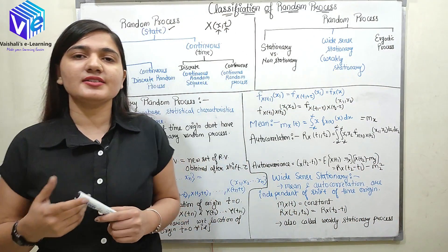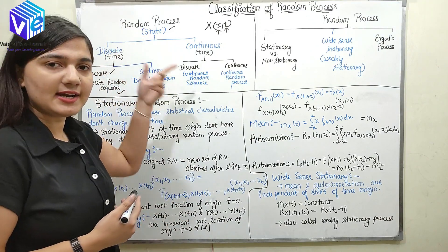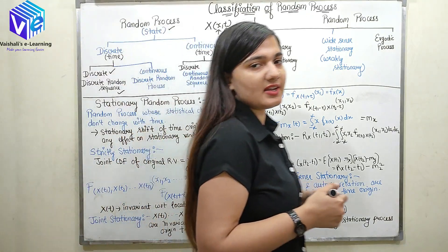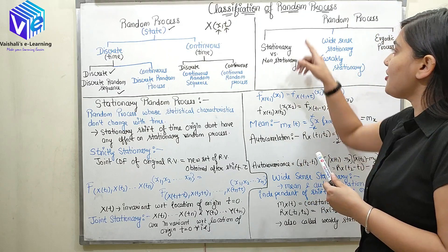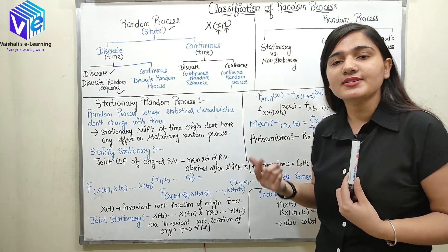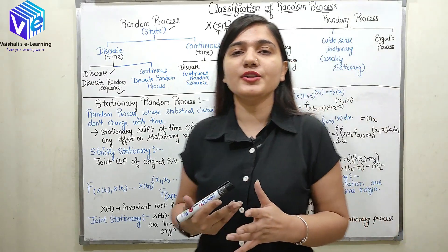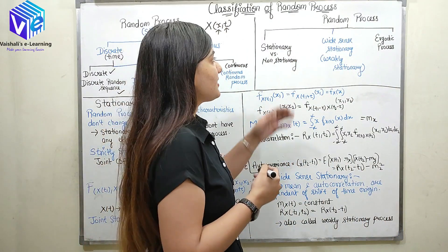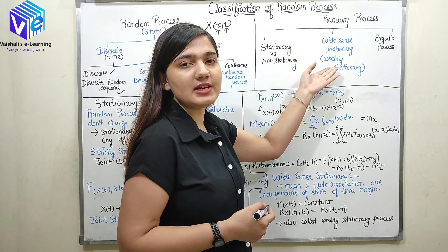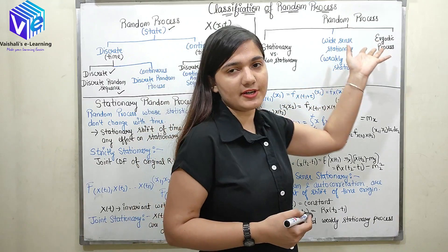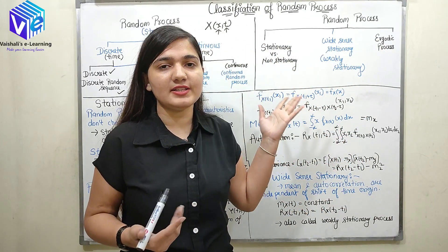So I hope you understood the various types of classification of random process depending upon state and time. Now the second type of classification, which is really important, is: first, stationary versus non-stationary; second, wide sense stationary, also called weakly stationary; and third, ergodic process. We will go and find out in detail what all these processes are.